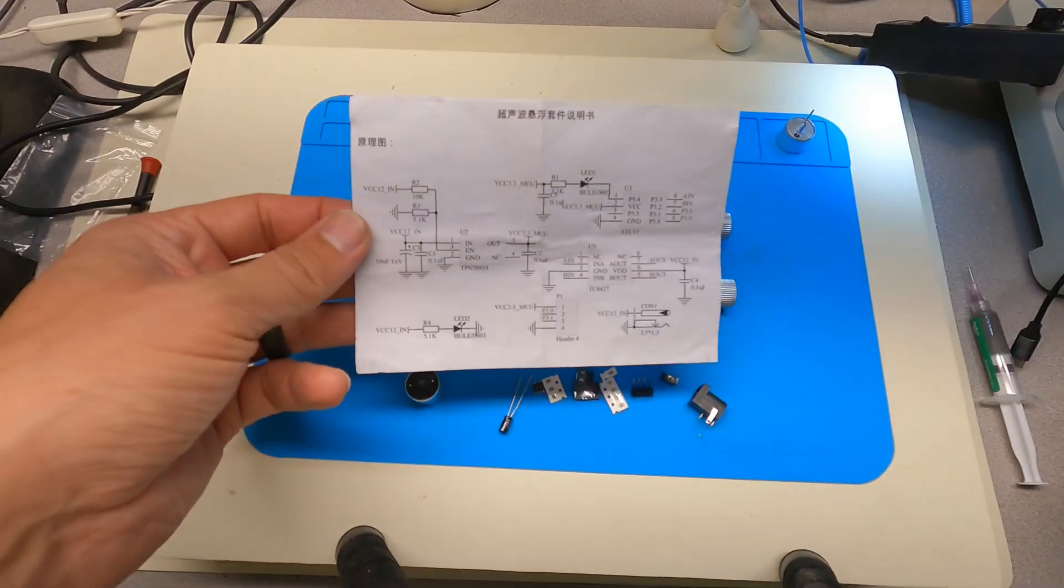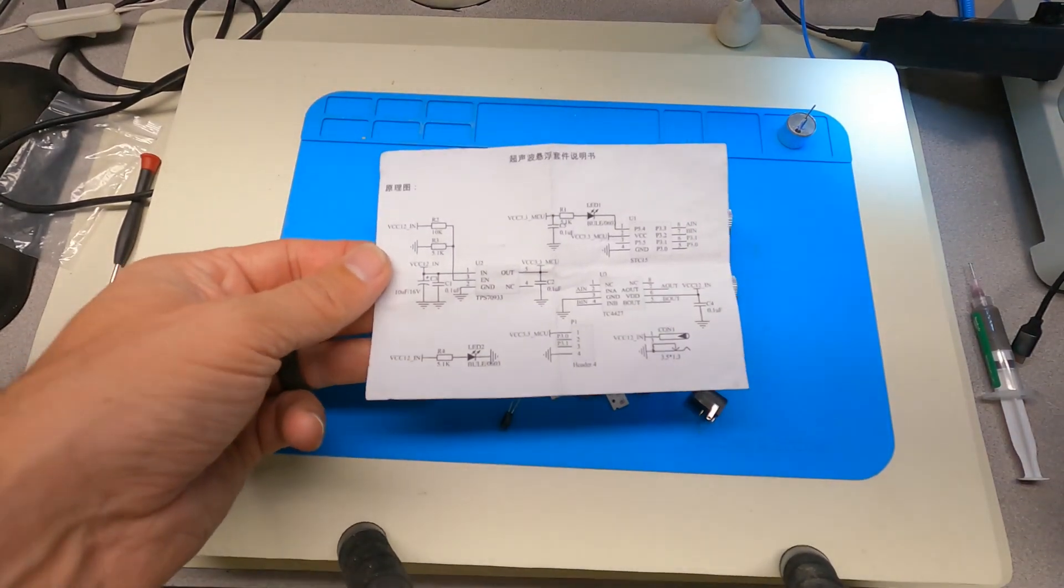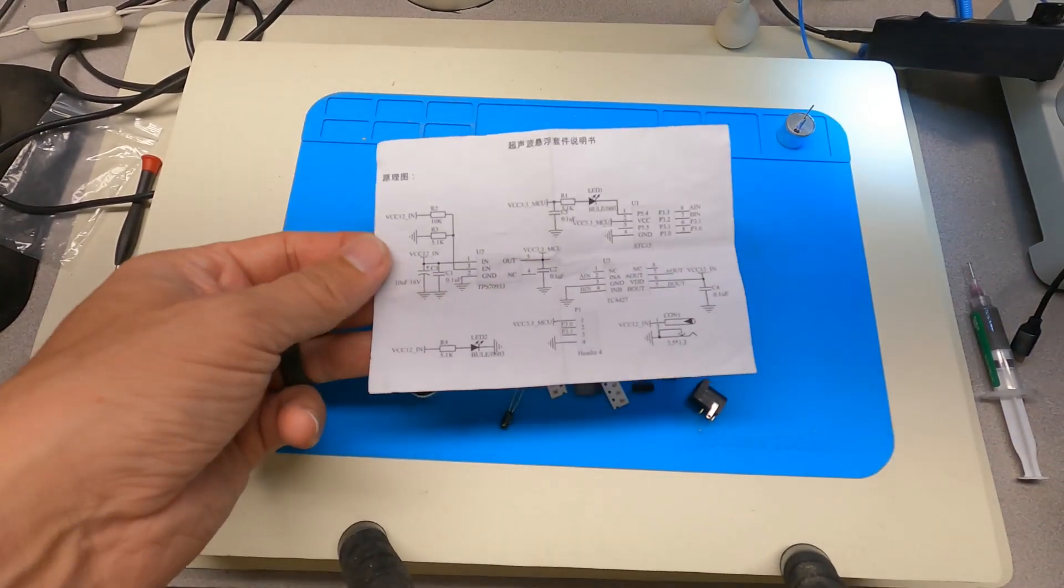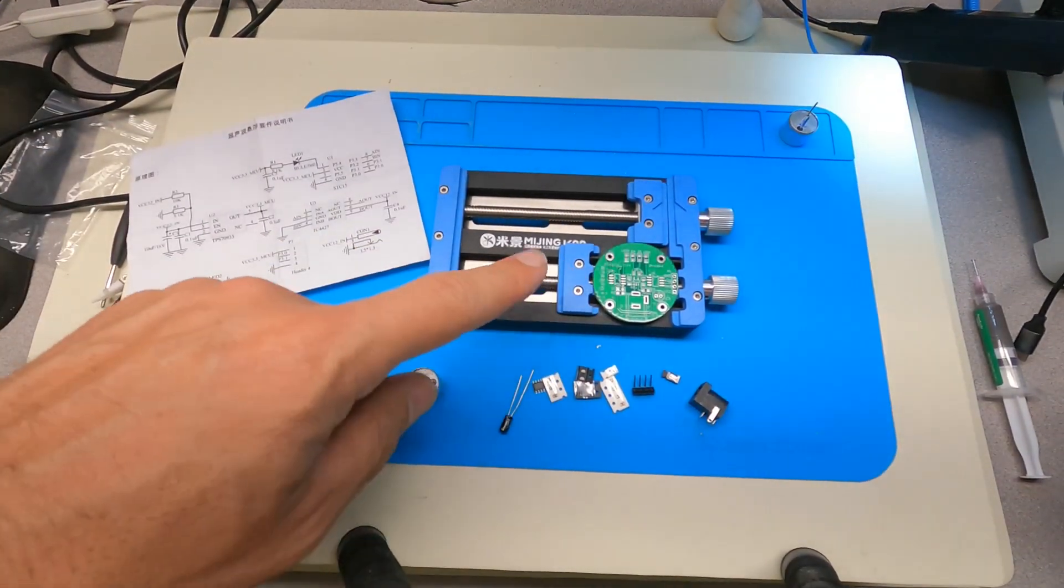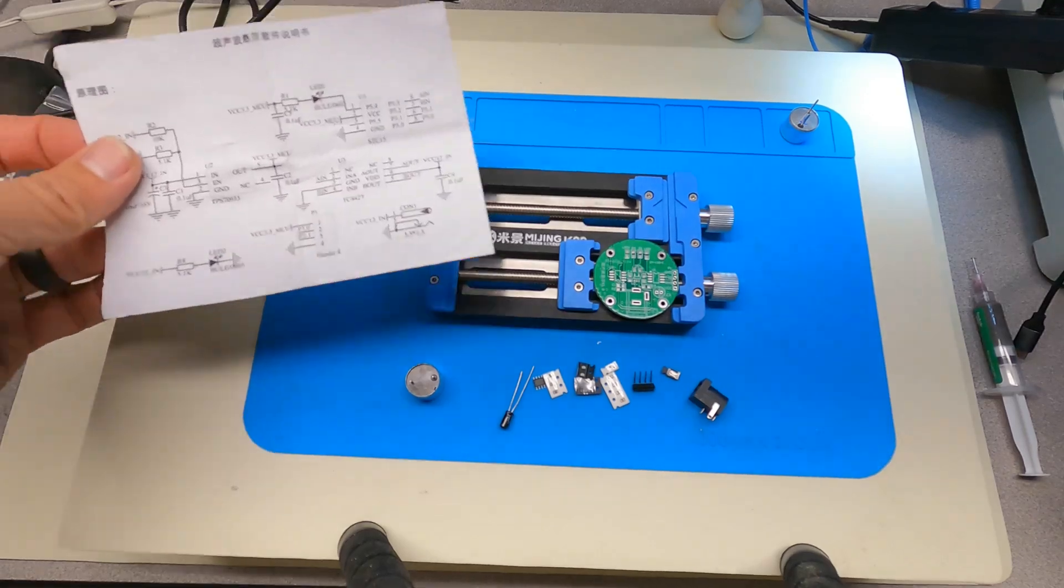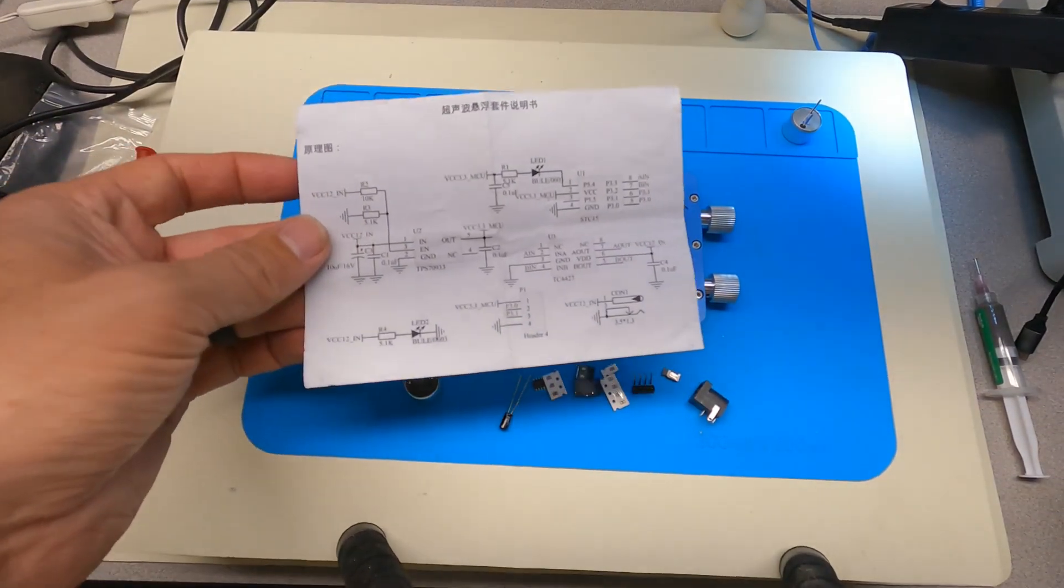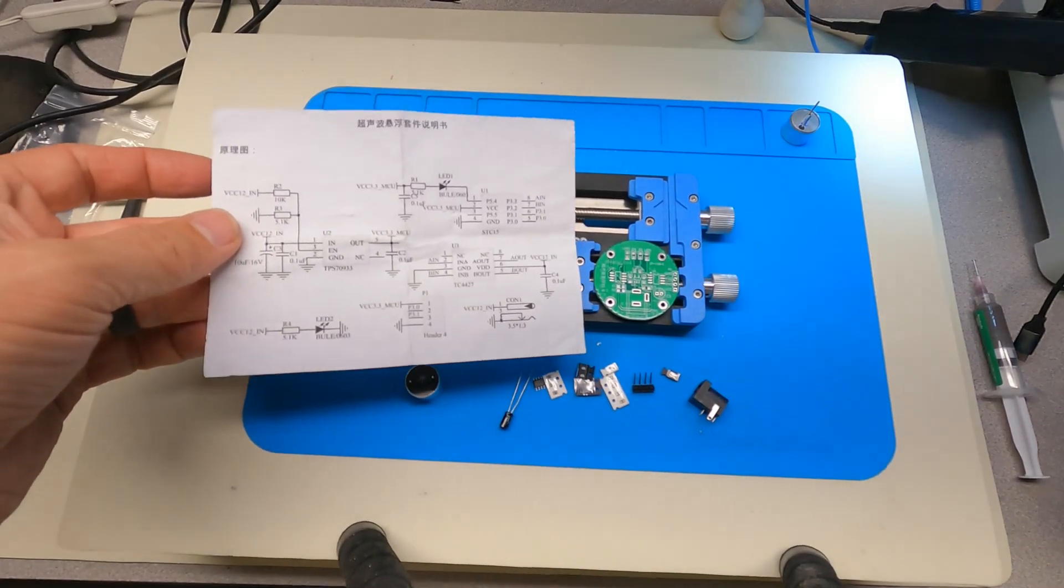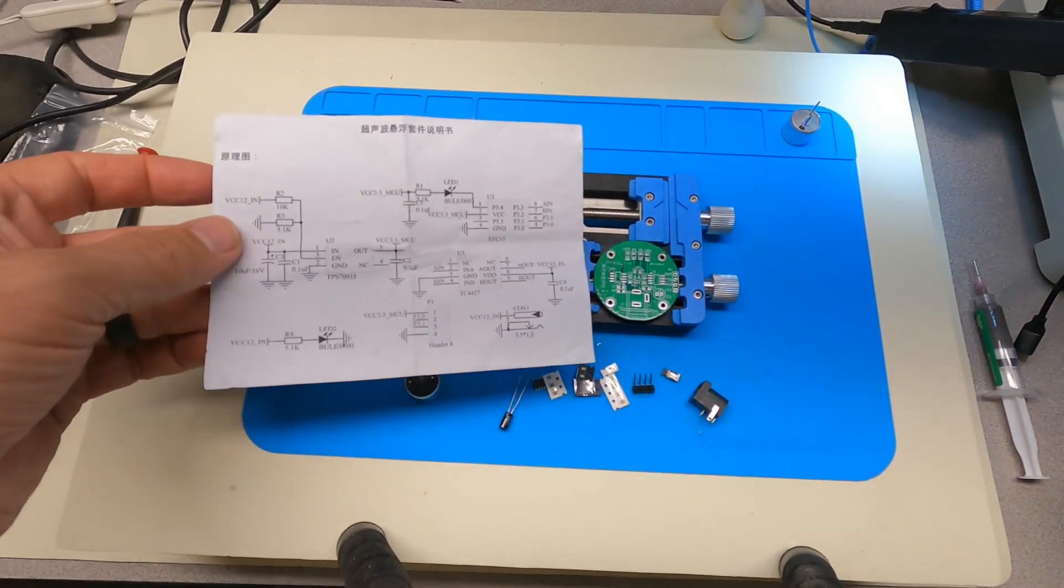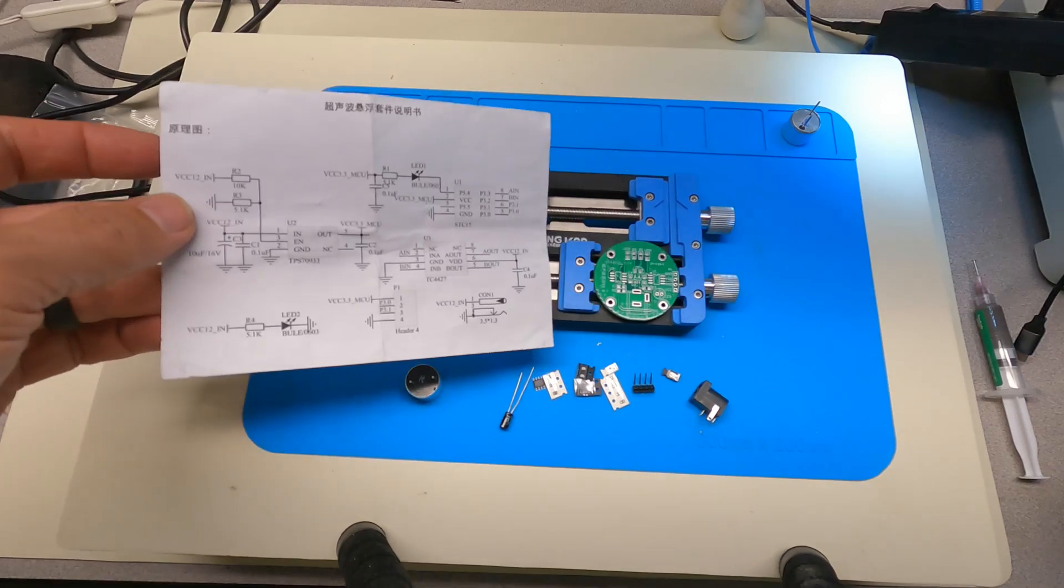So they do provide a schematic that shows how all of the parts need to be put together, but translating that to the actual printed circuit board is really not too hard. You've got the reference designators and the overall proximity to other components will be fairly easy to see.